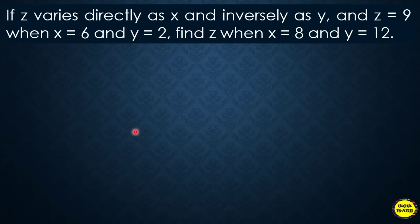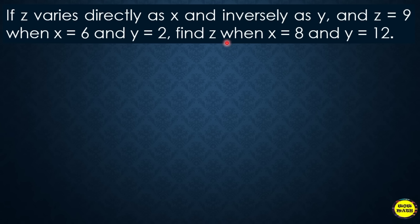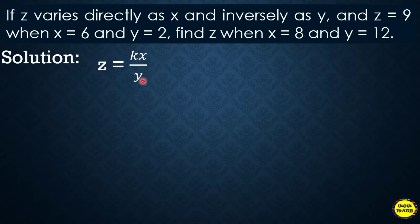Another example: If Z varies directly as X and inversely as Y, and Z = 9 when X = 6 and Y = 2, find Z when X = 8 and Y = 12. First, translate the statement into equation: Z = KX/Y. Then substitute the given values: Z = 9, X = 6, Y = 2.